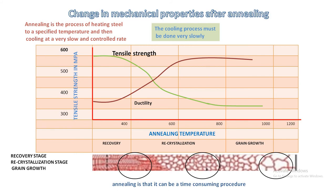The main drawback with annealing is that it can be a time-consuming process depending on which materials are being annealed. Materials with high temperature requirements can take a long time to cool sufficiently, especially if they are being left to cool naturally inside an annealing furnace.